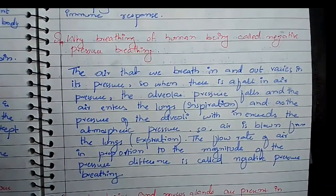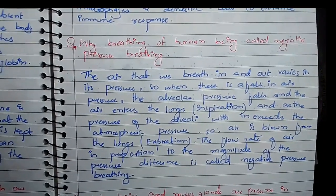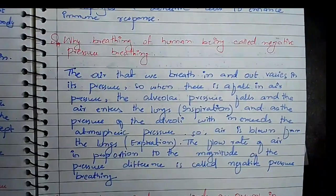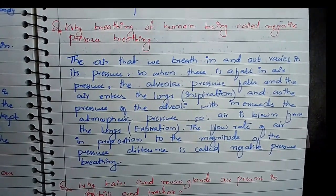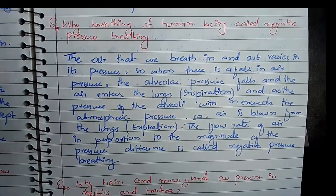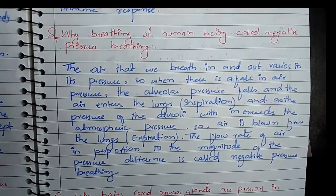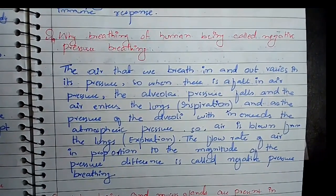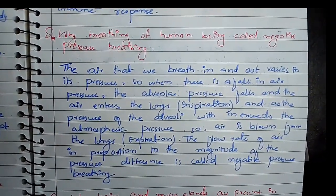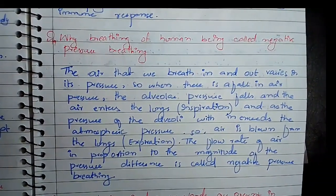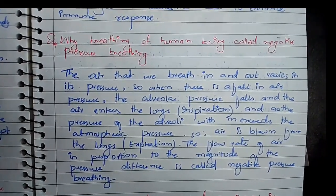Question number 19: why is breathing of human beings called negative pressure breathing? During breathing in and breathing out, the pressure in the lungs varies. When pressure in the lungs is reduced and atmospheric pressure is greater, air enters the lungs. When the pressure of the alveoli exceeds atmospheric pressure, air is blown out — this is called expiration. The rate of air flow is proportional to this pressure difference, which is why human breathing is called negative pressure breathing.